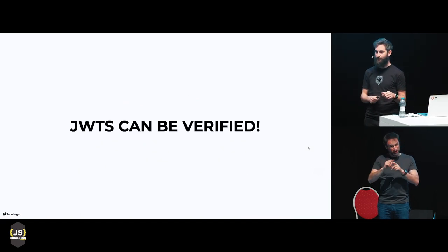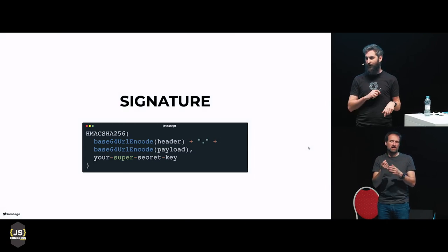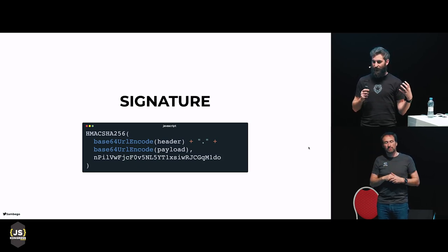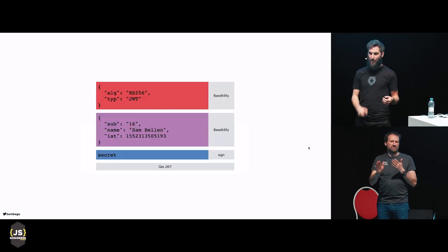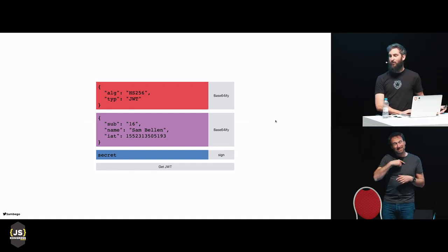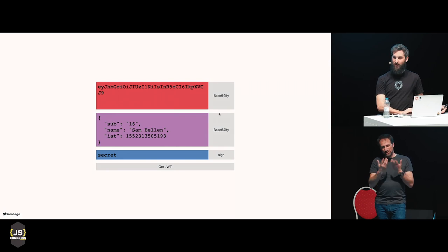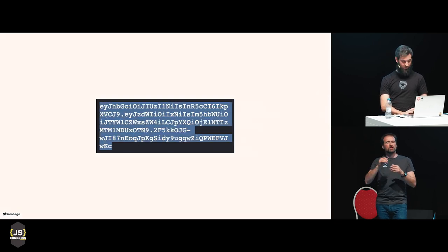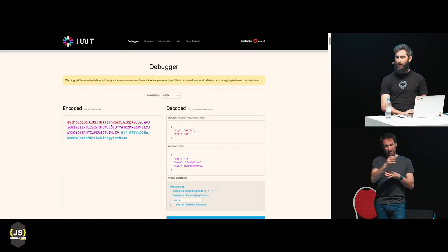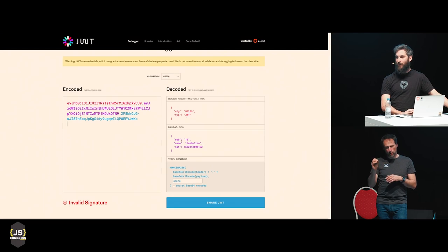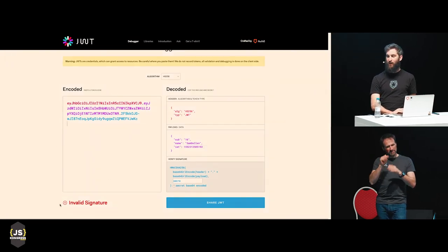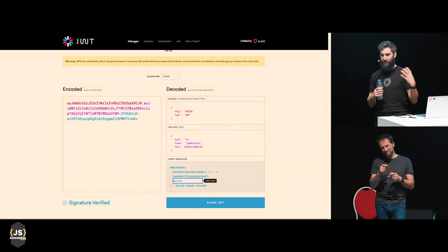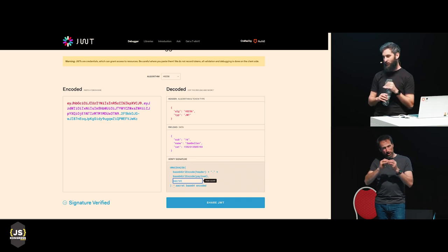JSON Web Tokens can be verified. Your secret key — which should be something more random and kept secret — can be used with these signing algorithms. You can also have asymmetric algorithms, which take a private and public key to sign your JSON Web Token. When you use such an algorithm, you need to share your keys. That's usually done with a JSON Web Key, which is a JSON object containing information about your public key that you can use to verify the signature of your JWT.